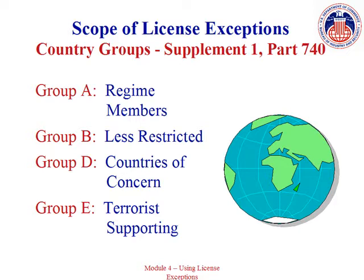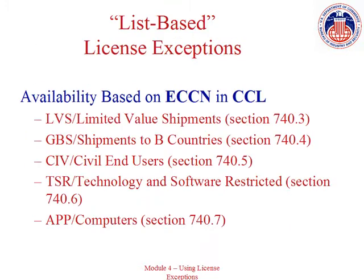Note that there currently is no Country Group C. There are five list-based license exceptions. The term list-based refers to the fact that these license exceptions are only available to the extent specified in an ECCN entry on the Commerce Control List. When you determine that a license is required for your transaction based on the ECCN and destination, the ECCN entry will indicate whether a list-based license exception may be available for the specific transaction that you're contemplating.